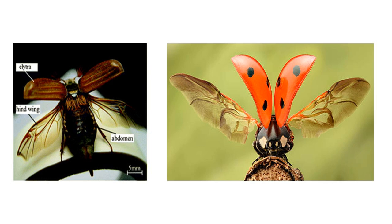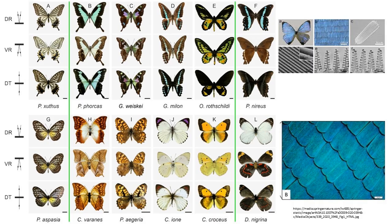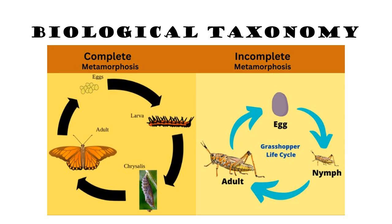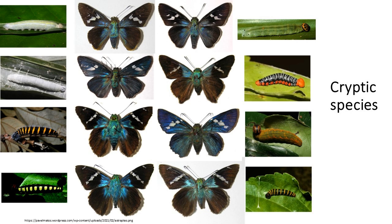For example, beetles in the order Coleoptera are distinguished by their hardened forewings called elytra, while butterflies and moths placed into order Lepidoptera are identified by their scaled wings. Biological taxonomy considers reproductive isolation and interbreeding potential as criteria for classification. Species are defined based on their ability to produce viable offspring with one another. This approach helps in identifying cryptic species that may look similar morphologically but cannot interbreed.